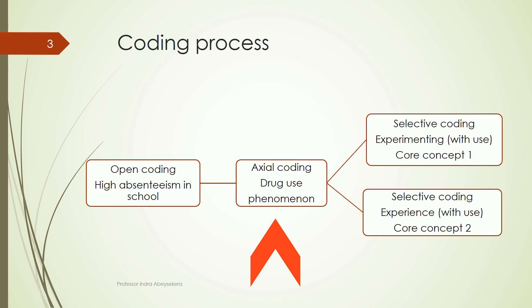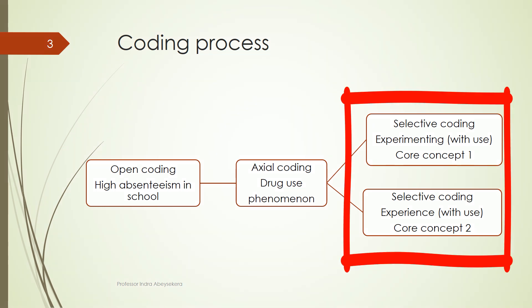We then focus on drug use at the axial coding stage, trying to obtain more information about drug use in schools. As we obtain and analyze additional data, we move to the selective or theoretical coding stage, where we come to understand and exhaust the meaning of drug use at the school level. We find two sub-concepts emerging: one is experimenting with drug use, and the other is experiencing drug use.